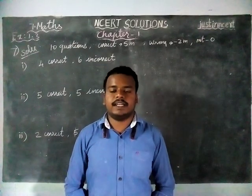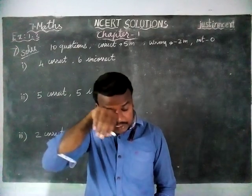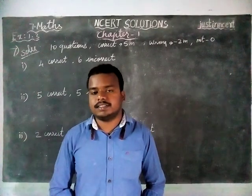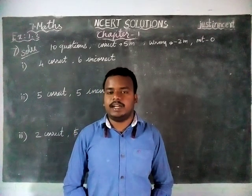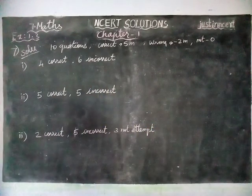Here in a class test, total number of questions are 10. In that, correct answers will get 5 marks and wrong answers will get minus 2 and not attempted is 0 marks. We are going to find 3 persons' marks.